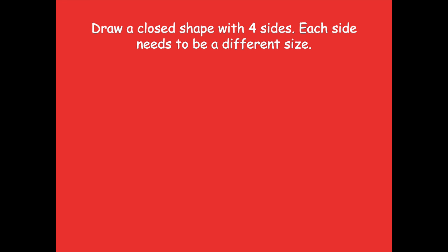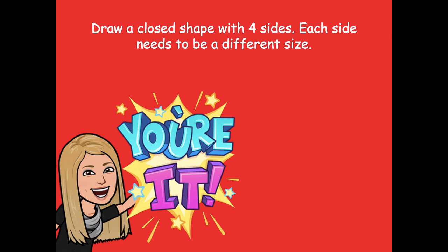Draw a closed shape with four sides where each side is a different size. You're drawing any shape you want with four sides — not a square and not a rectangle. Pause the video, draw a shape with four sides where the sides are different sizes, then click play when you're ready for the next step.